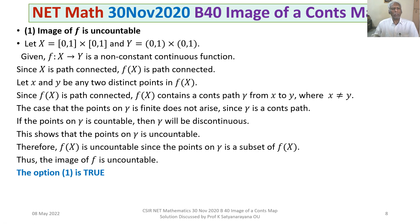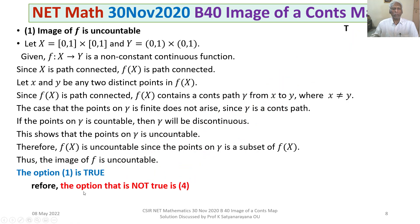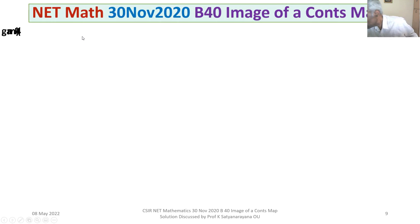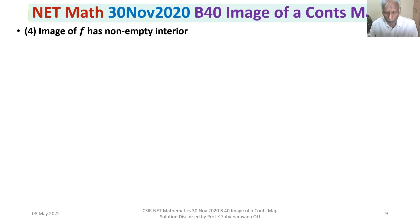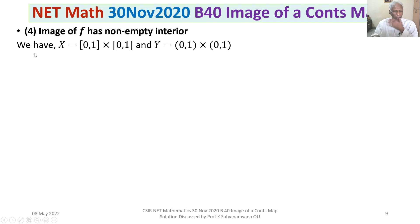So far we have shown Options 1, 2, and 3 are true. Since this is a Section B question with only one correct answer (i.e., one option that is not true), Option 4 must be the one that is not true. However, I will establish this with a counter-example. Option 4 states: the image of f has non-empty interior. Let us construct a counter-example.